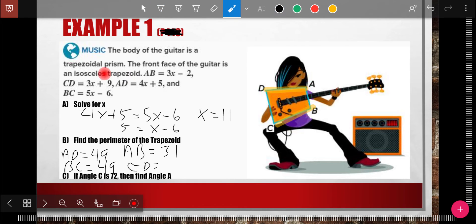CD, CD is right here. CD is 3X plus 9. Plug the 11 in. 3 times 11 is 33. Plus 9, 42.